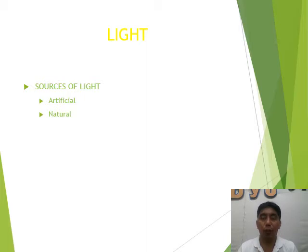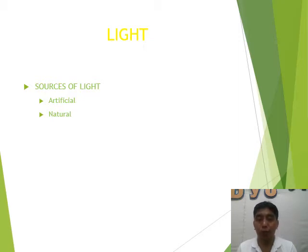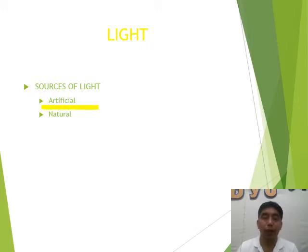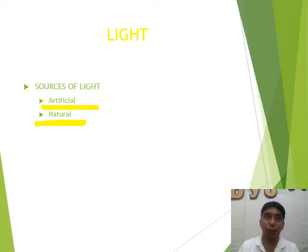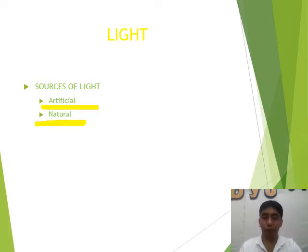One of the most important topics we need to know about photography is light. Remember from my first discussion that light is one of the elements of photography — without light, there will be no photography. There are basically two sources of light: artificial, which is human-made, and natural. Both are used in photography and are both useful and important. In the absence of one, you can use the other.